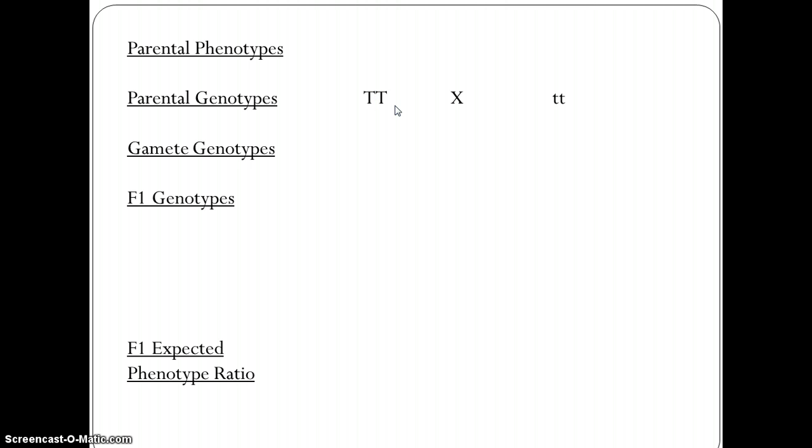Homozygous means that the individual has inherited the same alleles from each parent, so in this case a capital T for tongue rolling allele from each parent. The second parent was homozygous recessive, so inherited two of the same allele from each parent but in this case the lowercase t. From that we can work backwards and work out their parental phenotypes. The parent with the two large T's is a tongue roller, and if you've inherited two small t's you are a non tongue roller.